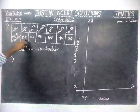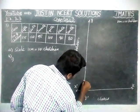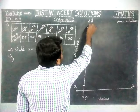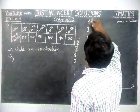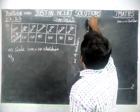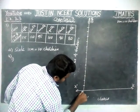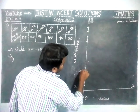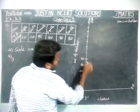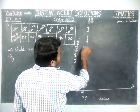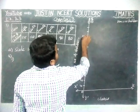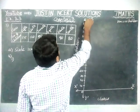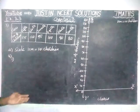We are going to draw up to 140. This is the 0 origin point. We mark: 10, 20, 30, 40, 50, 60, 70, 80, 90, 100, 110, 120, 130, 140 — up to 140 we have written on the y-axis.